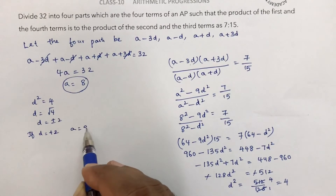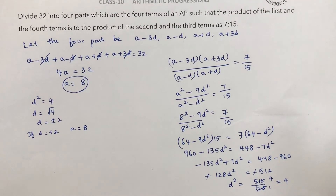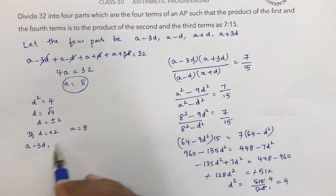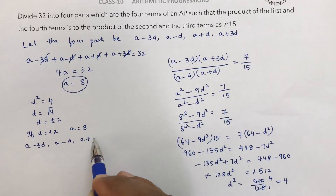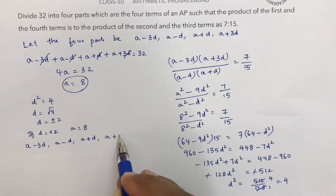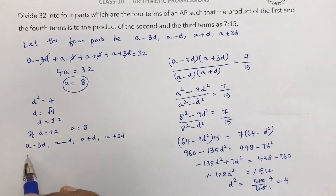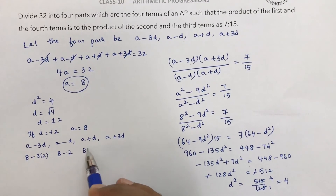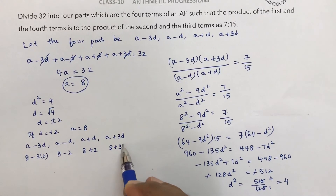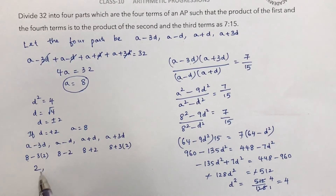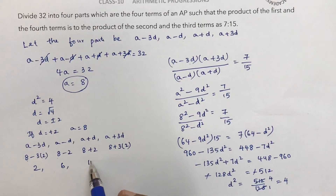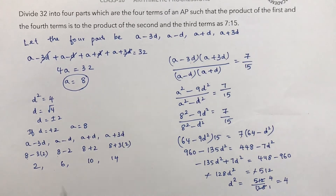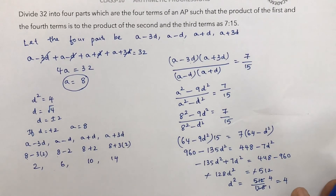If d = +2 and a = 8, the four parts are: a − 3d = 8 − 6 = 2, a − d = 8 − 2 = 6, a + d = 8 + 2 = 10, a + 3d = 8 + 6 = 14. So the four terms are 2, 6, 10, 14.